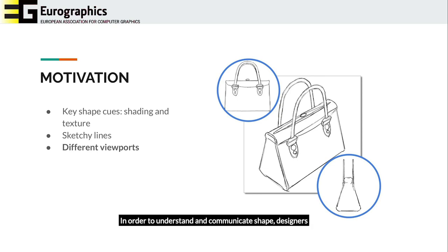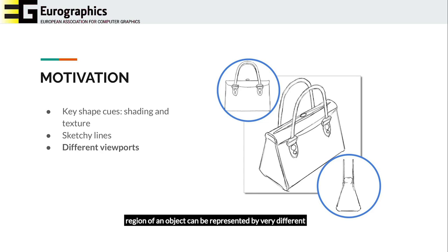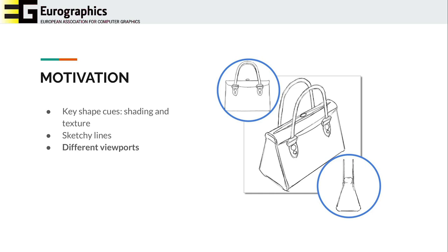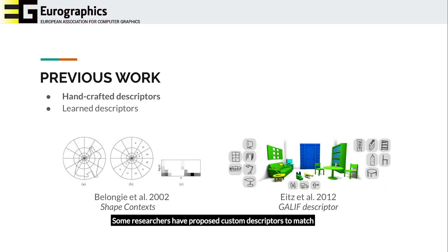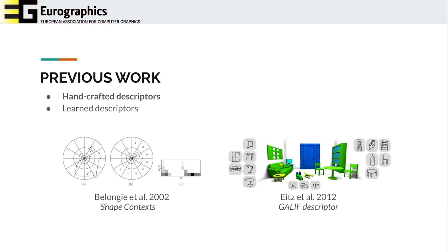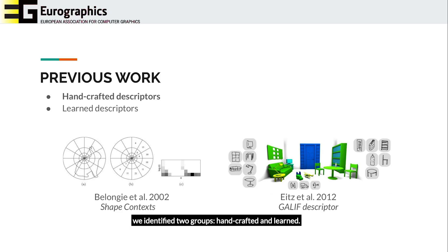In order to understand and communicate shape, designers often draw different views of the same object. This complicates finding local matchings, since the same region of an object can be represented by very different strokes when changing viewports. Some researchers have proposed custom descriptors to match line drawings. In particular, we identified two groups: handcrafted and learned descriptors.